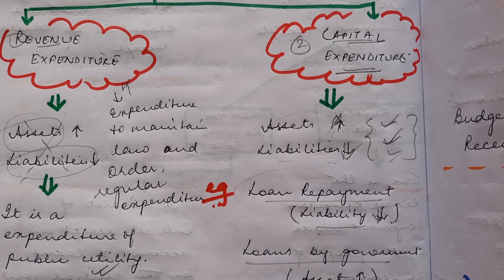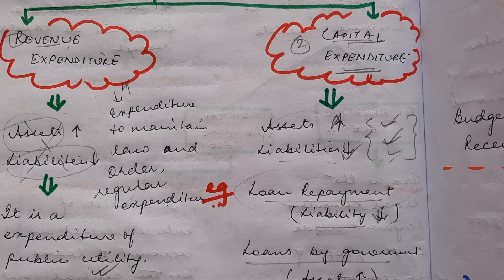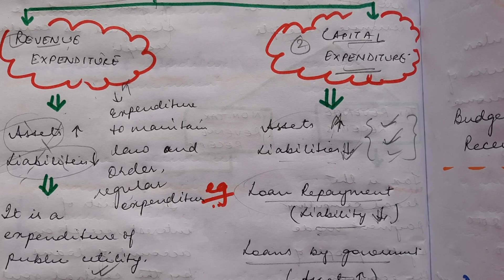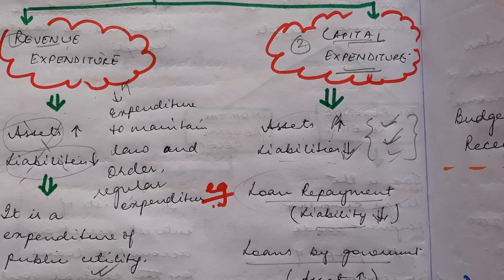So this is what we have under budgeted expenditures — it is basically an outflow from the government's end. We'll keep it here and in our next class we'll move forward with the next part of the chapter. Om Namashiva.